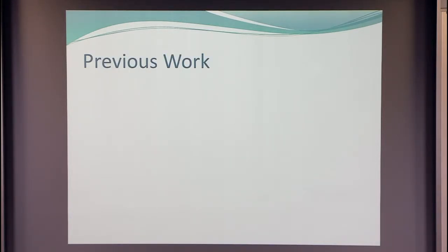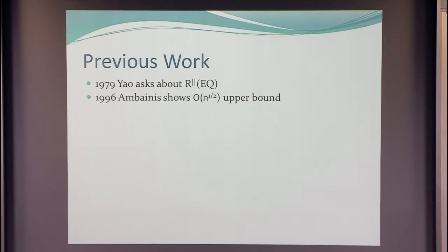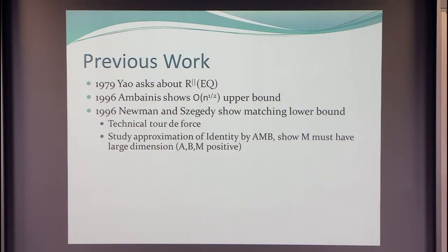There's a long line of previous results on this. Yao asked the question in 1979: what is the complexity of equality in the simultaneous message passing model? It took an amazing 17 years before this was resolved. Ambinis showed a lower bound of square root n. Crema, Nisan, and Ron conjectured in 1995 that it would be Omega(n), but it turned out to be square root n. In the same year, Newman and Segedy showed a matching lower bound, and if you look at that paper, it's really a technical tour de force.